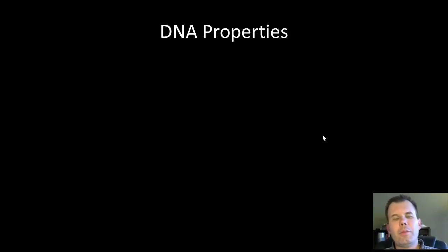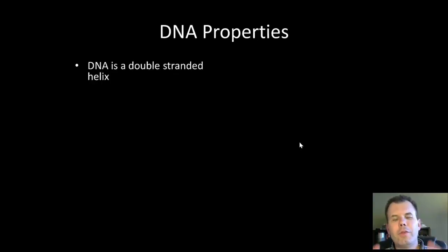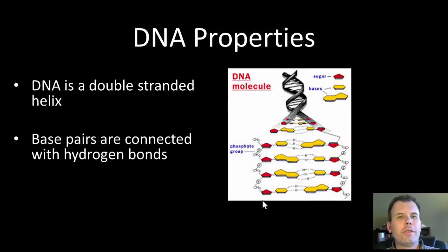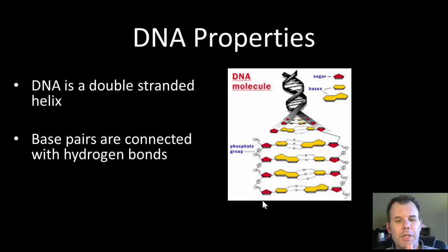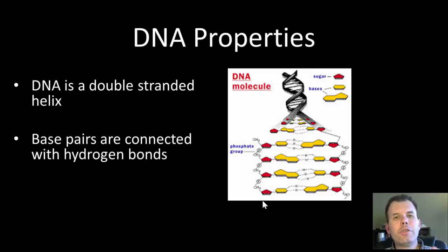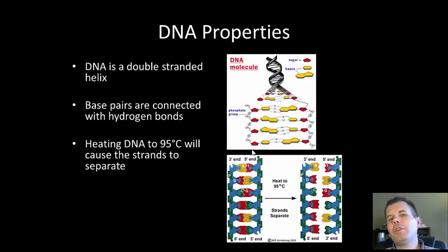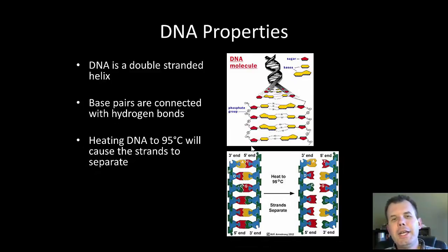One of the big things with DNA is its certain properties. DNA is a double-stranded helix — that's how it's found in nature. It has the phosphate sugar backbone and the nitrogen bases that are the rungs of the ladder. The base pairs are connected with hydrogen bonds, which is really important because it allows us to open and close the DNA very easily. One interesting intrinsic property of DNA is that if you heat it up to 95 degrees, you can separate the strands. Unlike proteins, which degrade and fall apart, DNA actually stays structurally together — the strands themselves come apart.